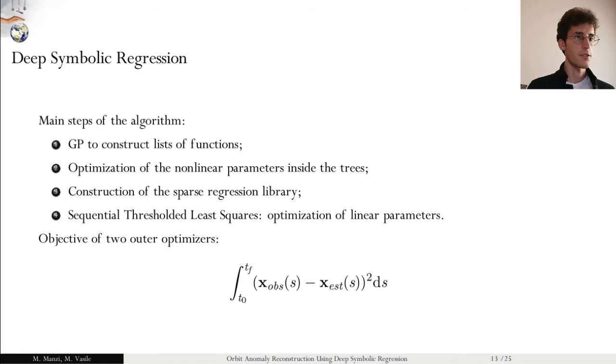Using this, we can construct the sparse regression and estimate via the sequential thresholded least squares the value of the linear parameters. In this way, we can at the same time leverage the power of linear analysis in the parts of the problem that are linear while maintaining the power of the symbolic regression part of the algorithm. To perform the outer optimization, we make use of the objective function, which in our case is approximated using the given observations using the Simpson rule.